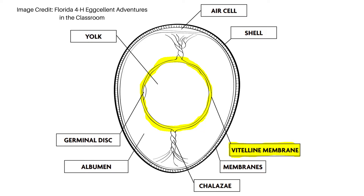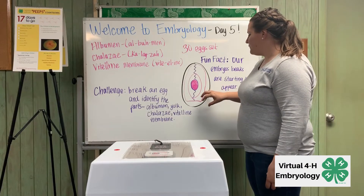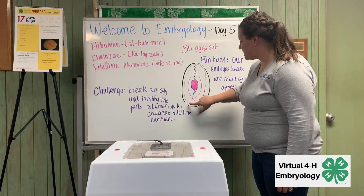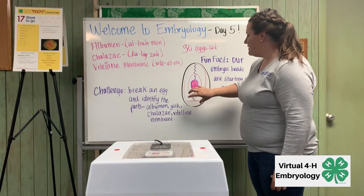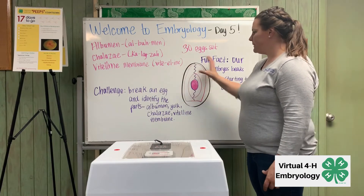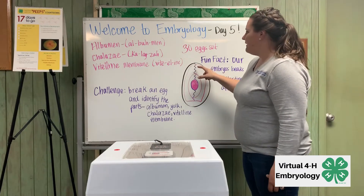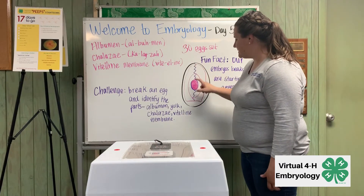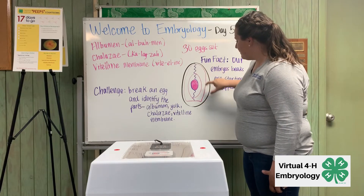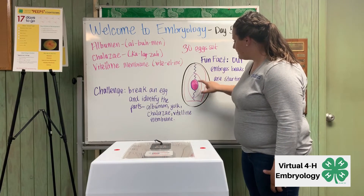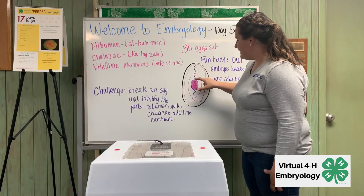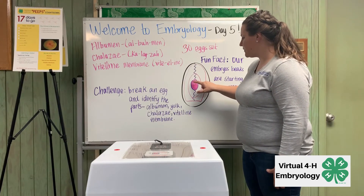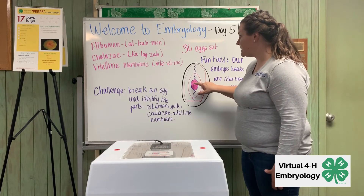I tried to do a little egg drawing for you here. This area here is that air sac that we talked about — see how it's empty? If this was an egg in the incubator it would be upside down. Then we have the chalaza, those bound proteins, the thin albumin out here, and then the thick albumin which is closer, and then the vitelline membrane represented by this purple circle with the yolk on the inside.